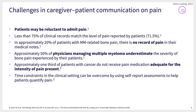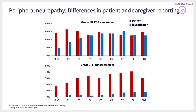In a study we did with bortezomib-based therapy, you see the cycles of chemotherapy plotted here. In blue is the pain grading made by the caregivers, and in red the grading by the patients themselves. For grade one and two polyneuropathy, at least at the end of the study, there was no big difference between patients and caregivers. In the beginning, patients sensed more frequently pain than was assessed by the caregivers.